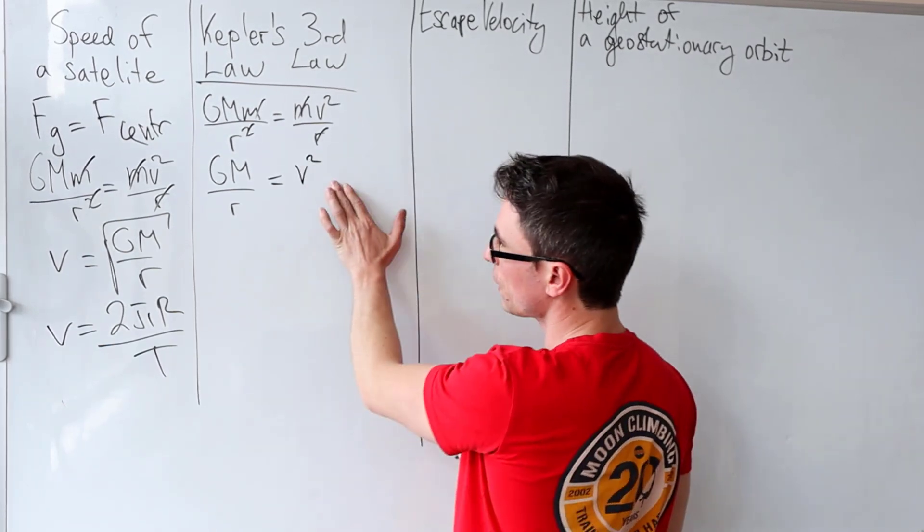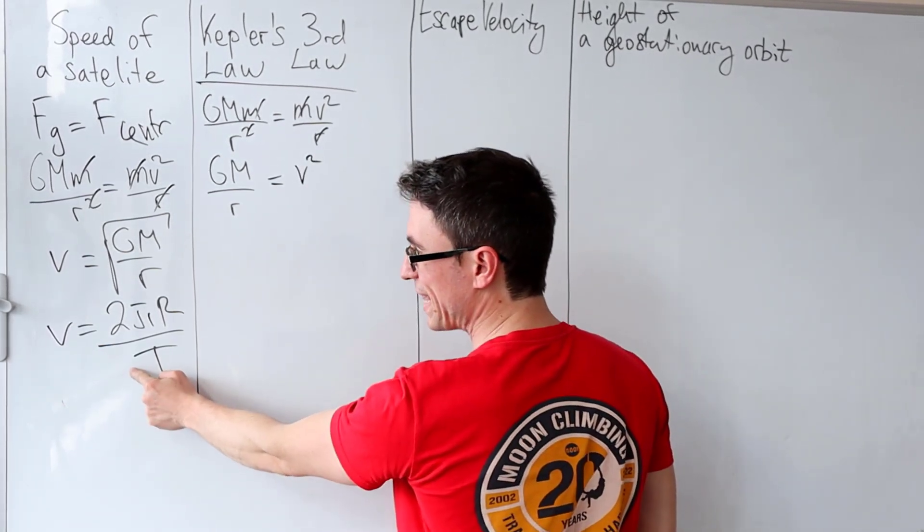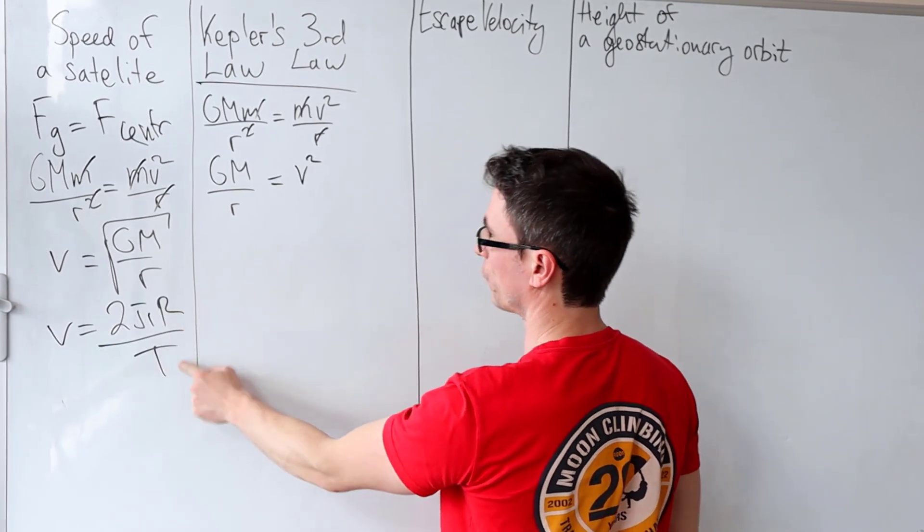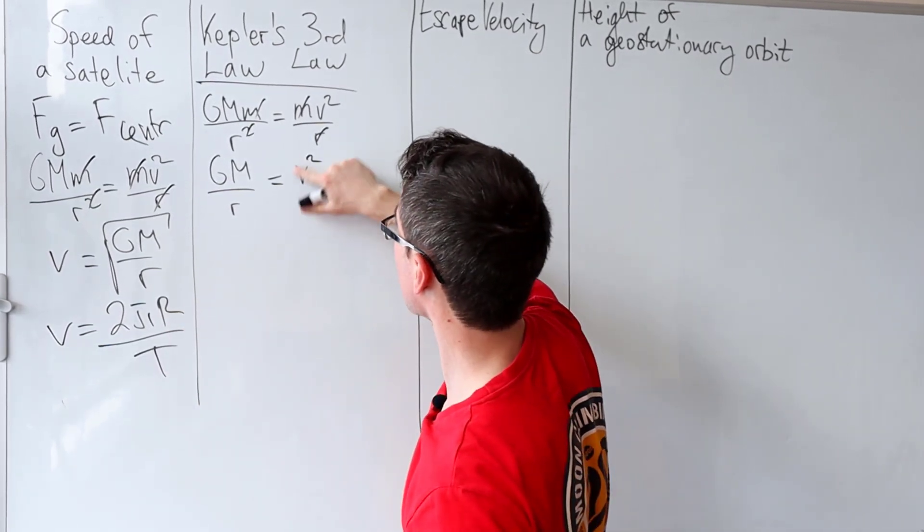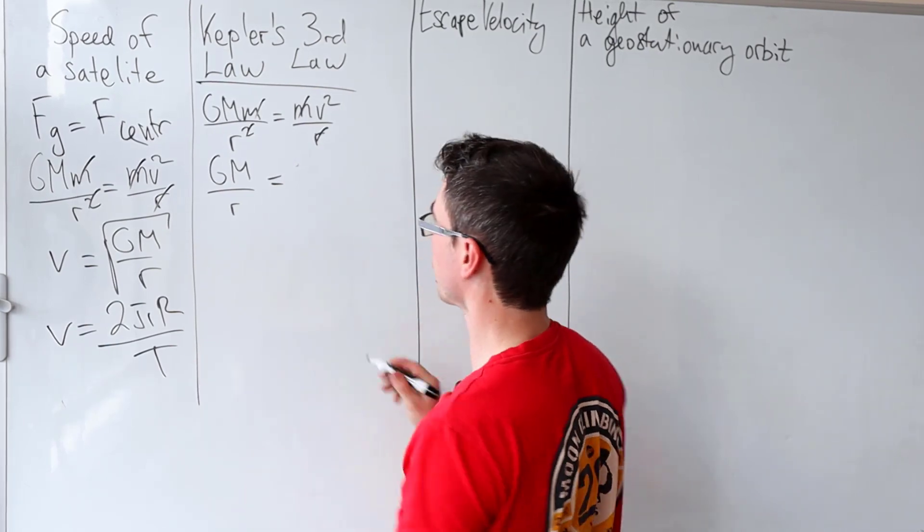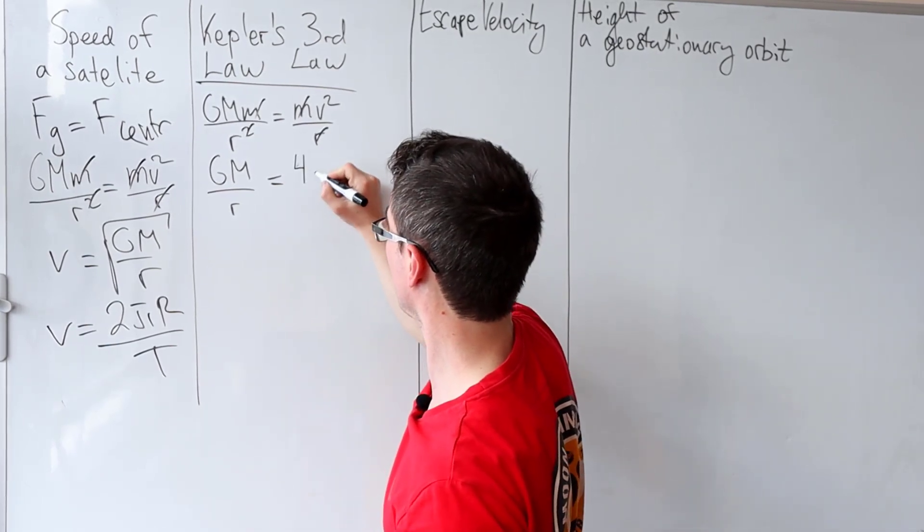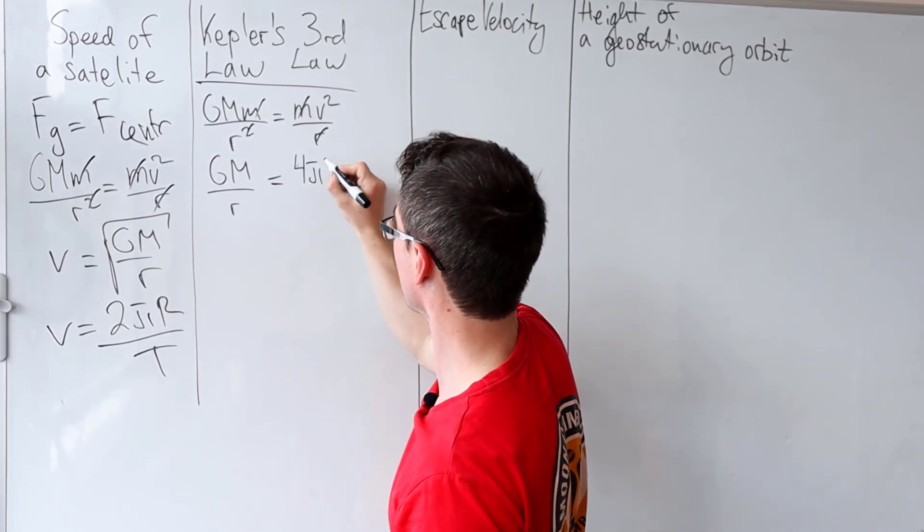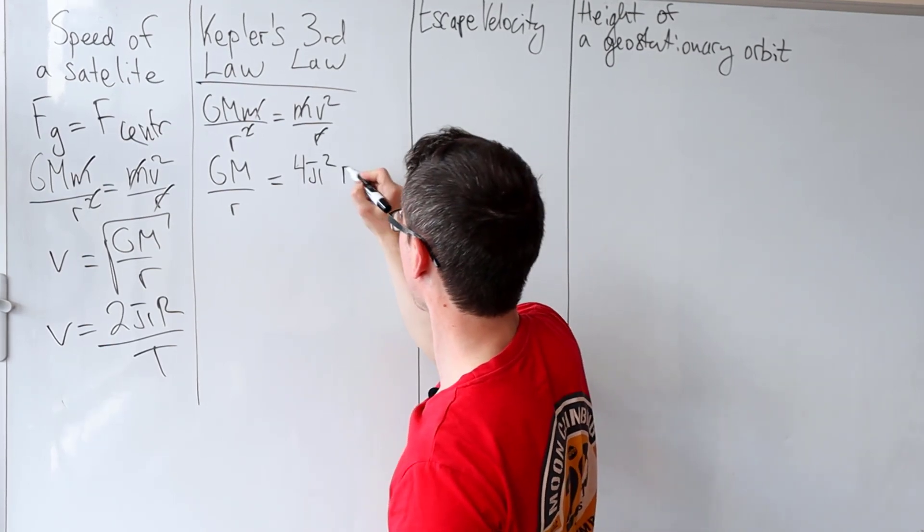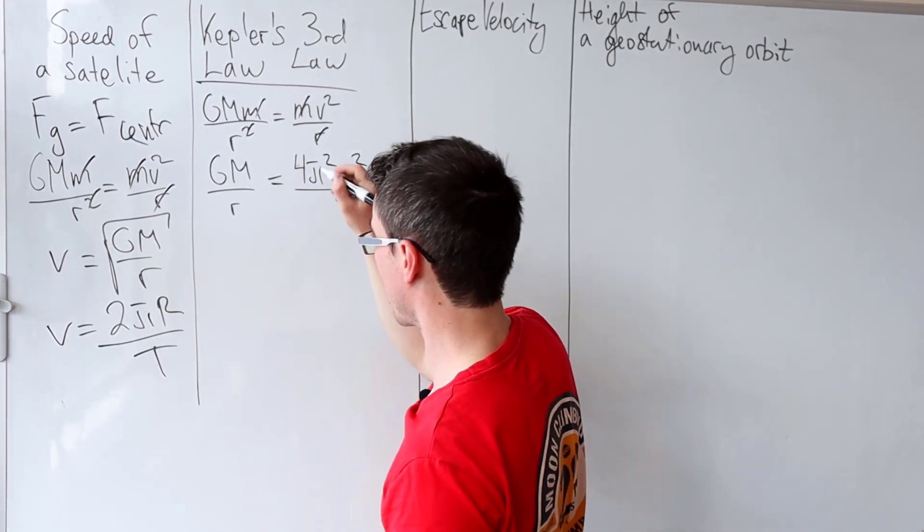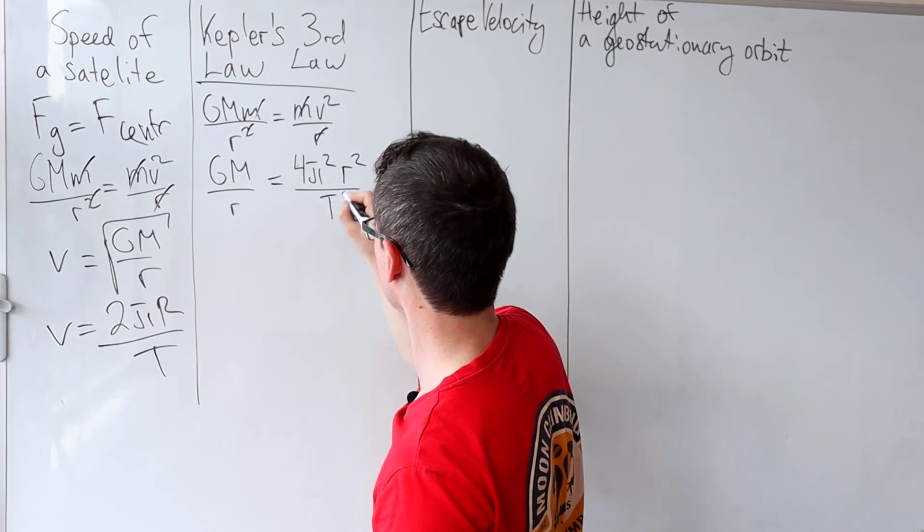Now, rather than just v², I'm going to plug in this expression 2πr/t into here. Now, what am I going to get if I square this? I'm going to get 4 which is 2 squared, π²r² then divided by t².